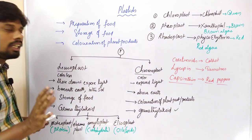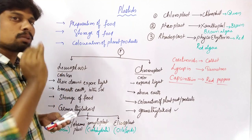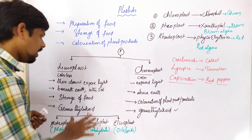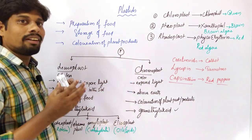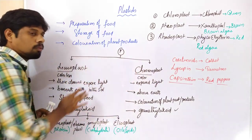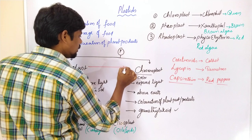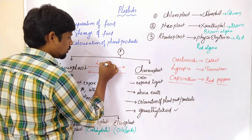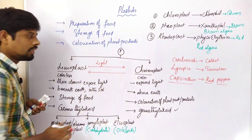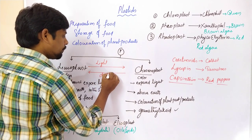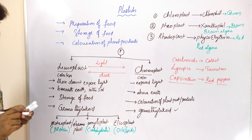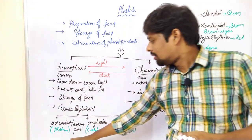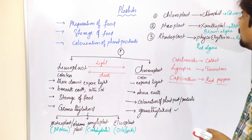An important point to note is the interconversion between Leucoplast and Chromoplast. If a Leucoplast is exposed to light, it converts into a Chromoplast. If a Chromoplast is kept in dark conditions, it converts back into a Leucoplast. This is the interchanging mechanism between the two. In this way, the classification of Plastids occurs, with different kinds of Plastids storing energy molecules and showing different pigments.